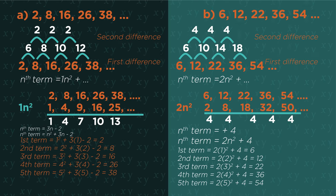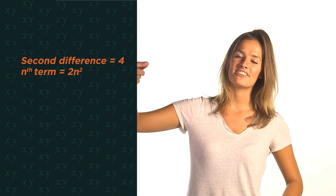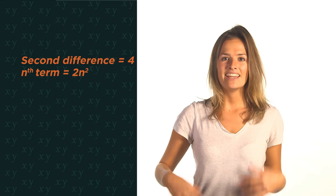How did you do? So there we have finding the nth term for quadratic sequences. Just remember to look for that second difference and then half it. If you have any questions, please comment below. Like and share our videos with your friends.